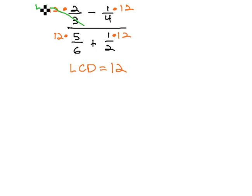12 over 3 reduces to 4. We now have 4 times 2, which is 8. 12 over 4 reduces to 3. We now have minus 1 times 3, or 3, over...